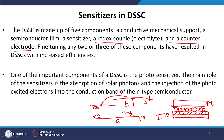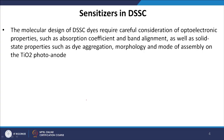Electrons starting from the TiO2 conduction band travel to the FTO substrate and into the external circuit, participating in electrical conduction. The molecular design of DSSC dyes requires careful consideration of optoelectronic properties such as absorption coefficient and band alignment, as well as solid-state properties such as dye aggregation, morphology, and molecular assembly on the TiO2 photoanode.